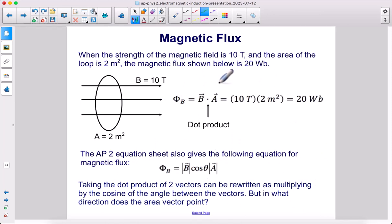Let's see a numerical example. When the strength of the magnetic field here, these lines here, that's the magnetic field, is 10 tesla, and the area of the loop is two square meters, the magnetic flux shown below is 20 Webers.